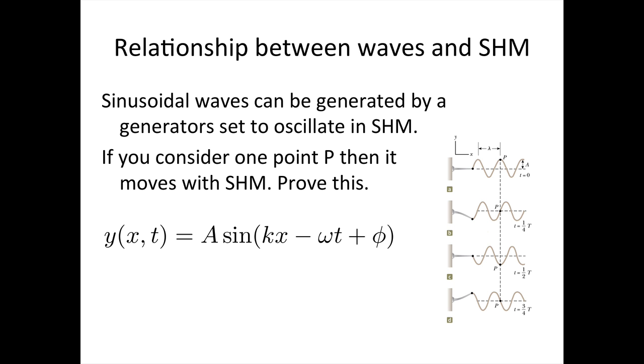OK. So in this oscillations topic, we've moved from looking at simple harmonic motion to looking at waves. What's the relationship? Well, the relationship is that if we have any point which is oscillating with simple harmonic motion, then it can generate a sinusoidal wave of the form that we've just derived here. And not only that, but if we consider any point in the medium as a wave with this wave equation passes, that point undergoes simple harmonic motion. OK. So what I want you to do now is prove this. Prove that if we consider one point P here, then it is moving with simple harmonic motion.